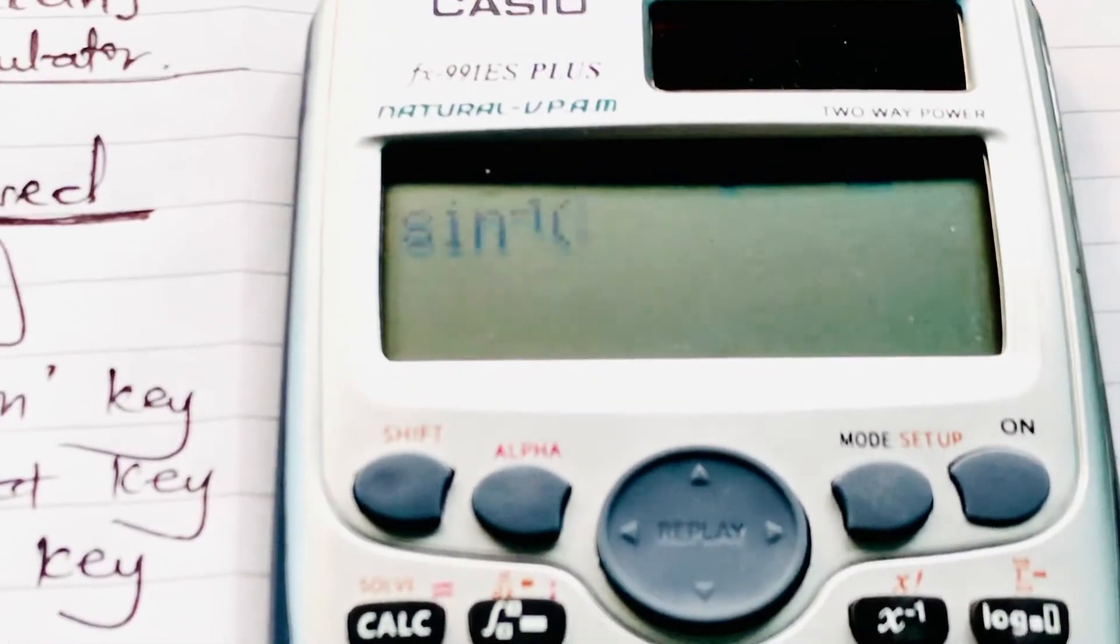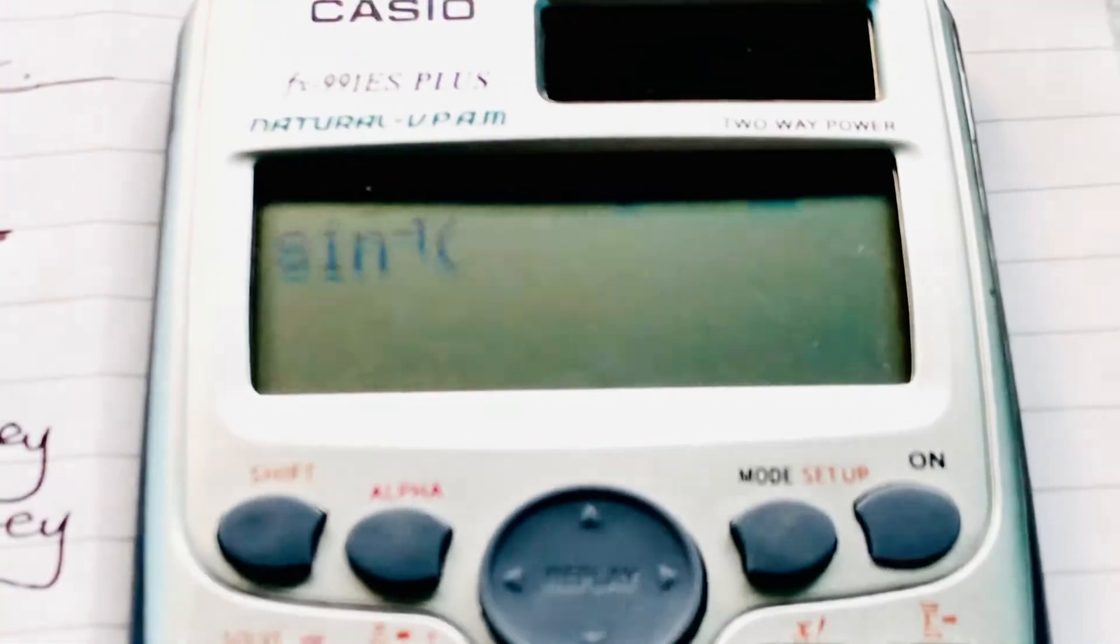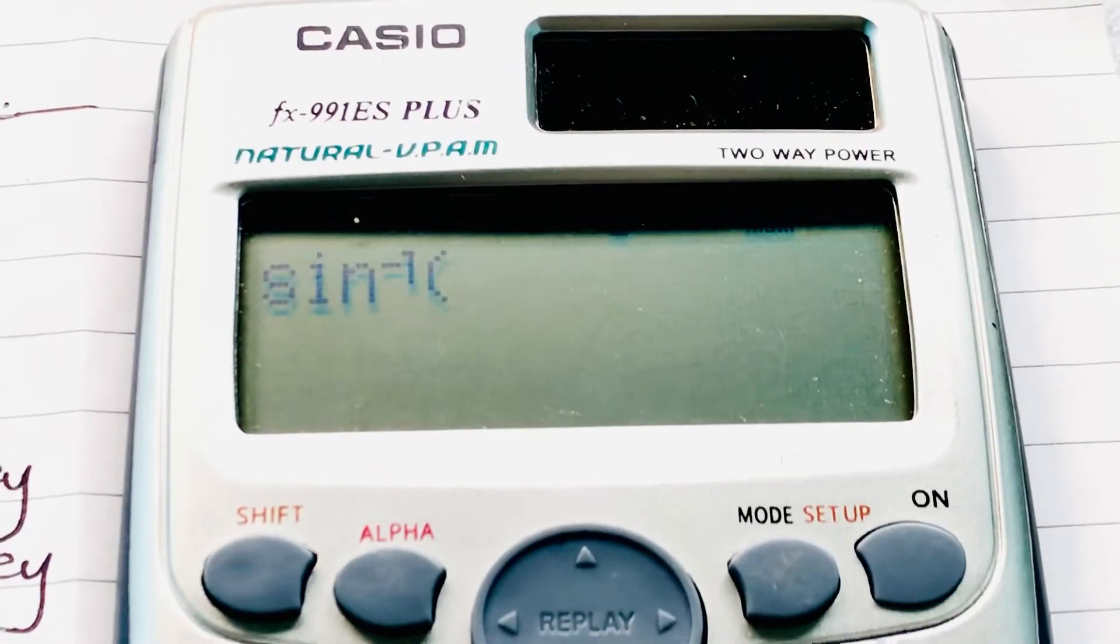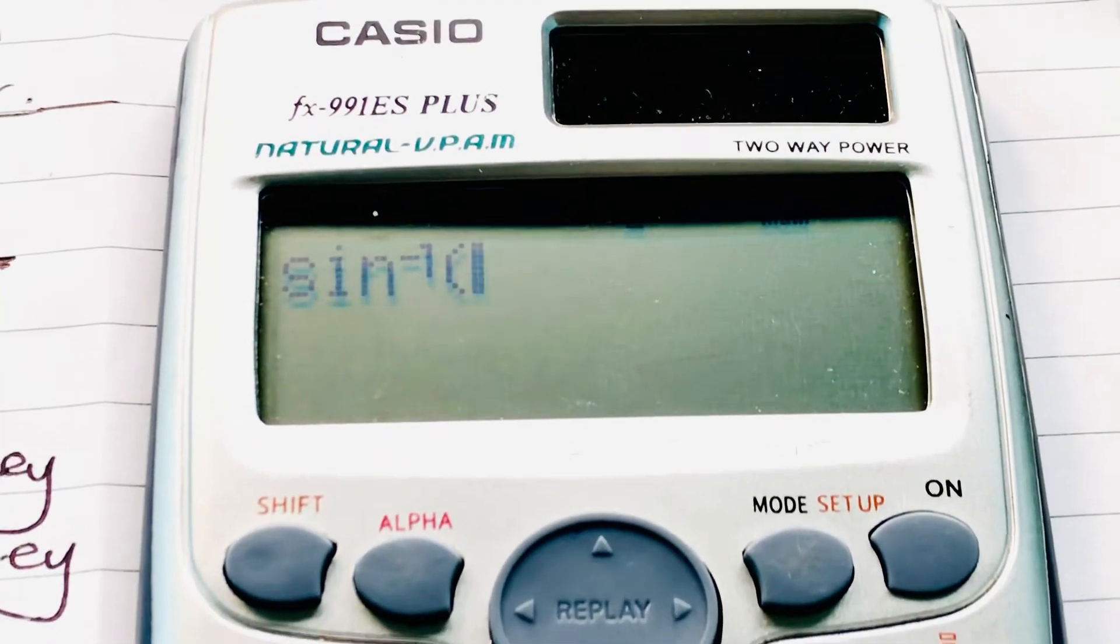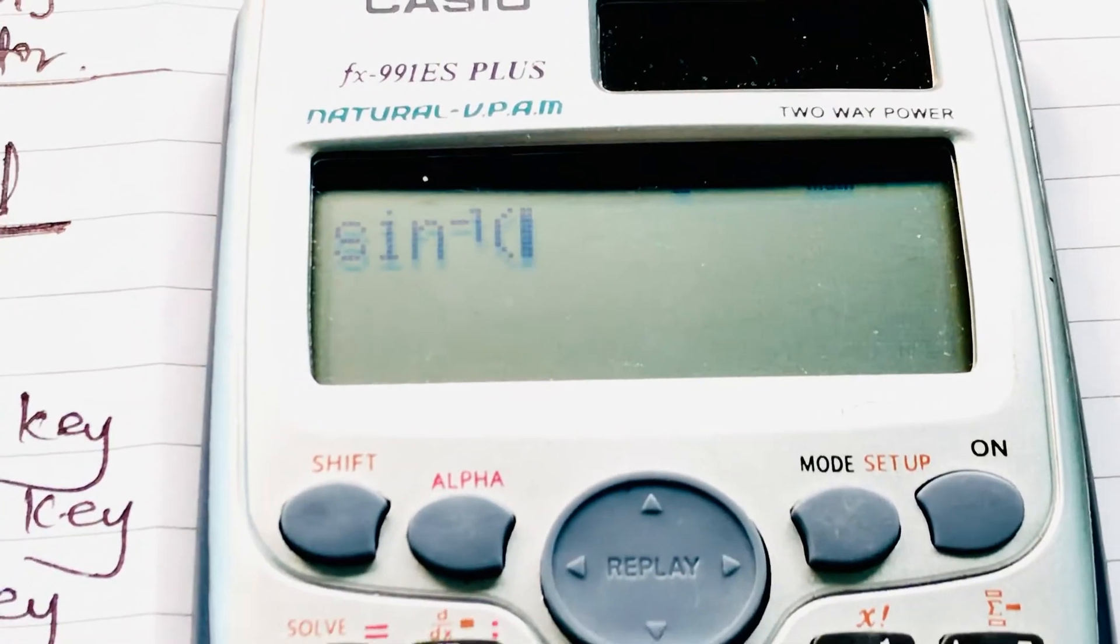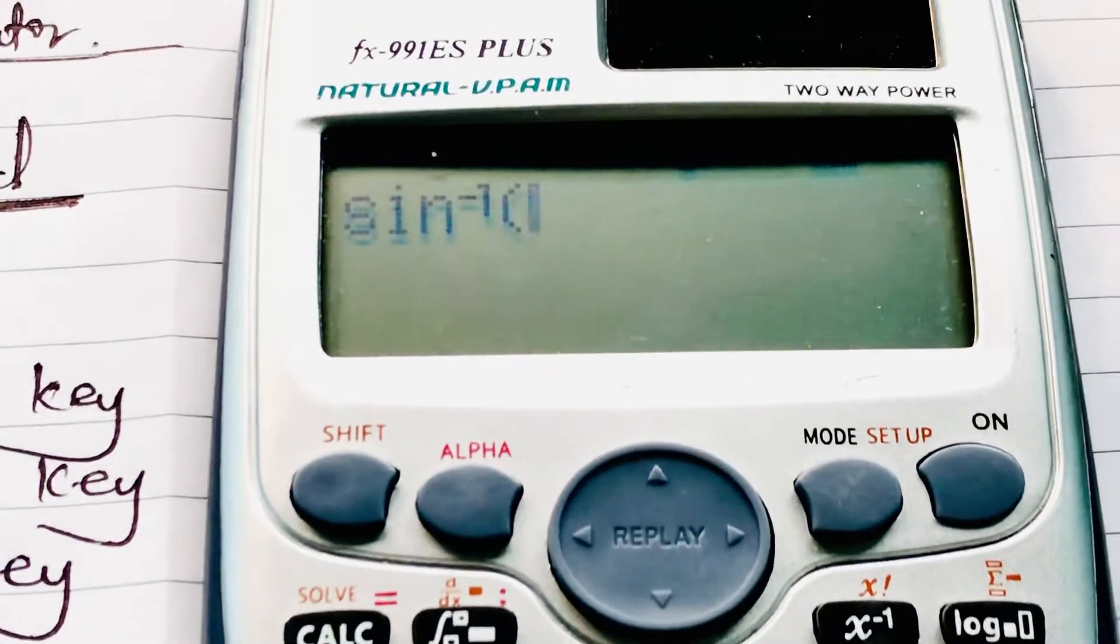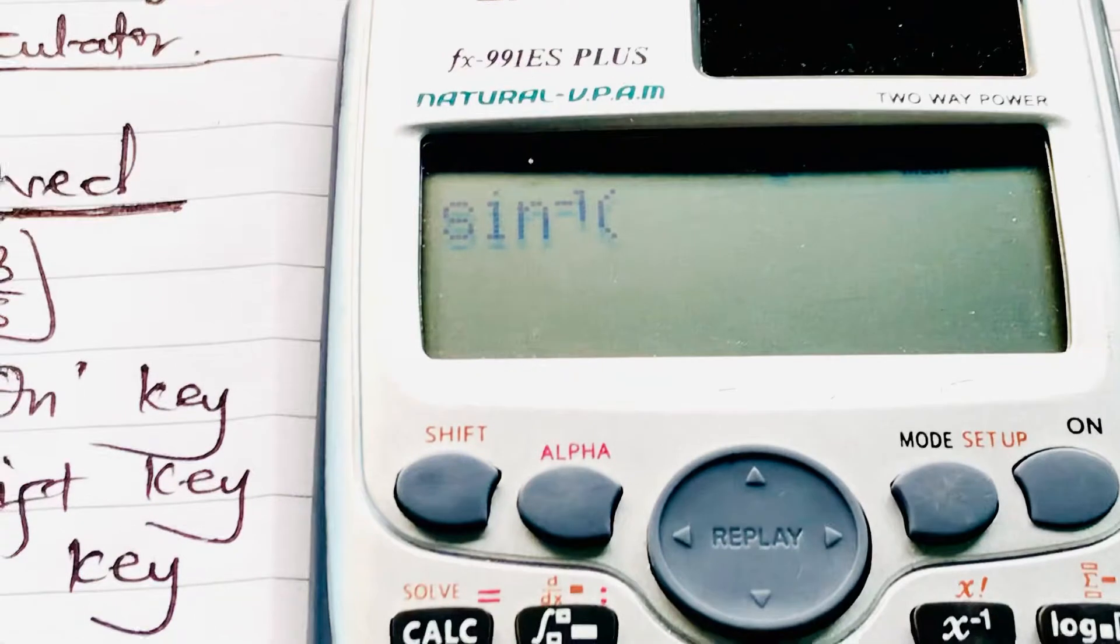To display our sine inverse, we punch in our figure, the figure that we are looking for. In this case, we are looking for 3 over 5.